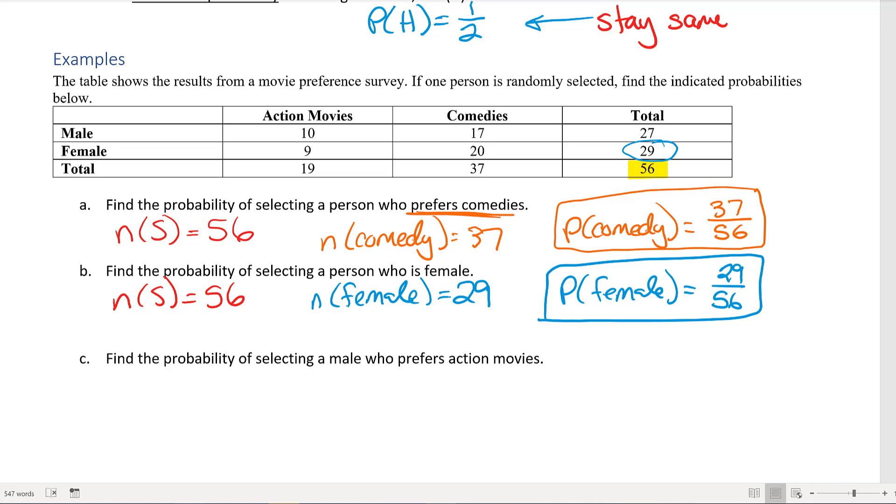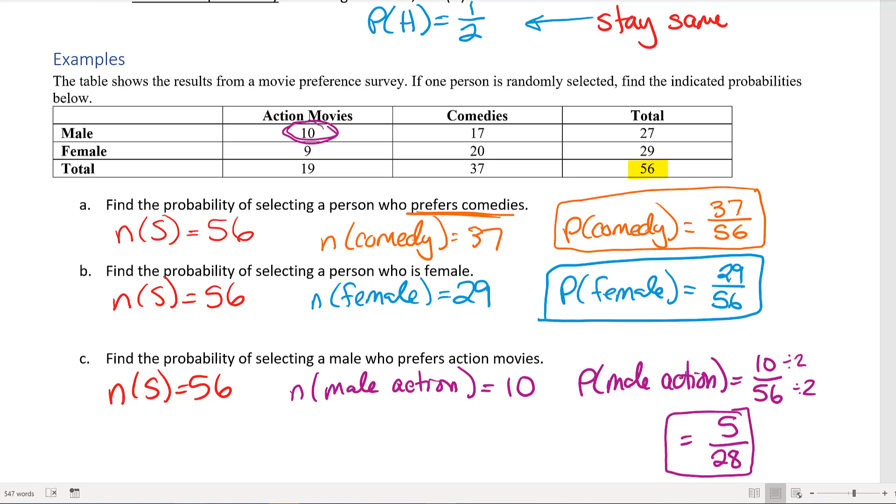Next we're trying to find the probability of selecting a male who prefers action. My sample space is still the same—56 members in the sample space. But when I'm trying to find the number of males who prefer action movies, I have to look inside my table. I have to match up the action column with the male column, which looks like 10 here. So the probability that we'll have a male who prefers action movies is 10 out of 56. Now 10 out of 56 reduces by 2, so that gets me 5 out of 28. And this concludes our lesson on fundamentals of probability.